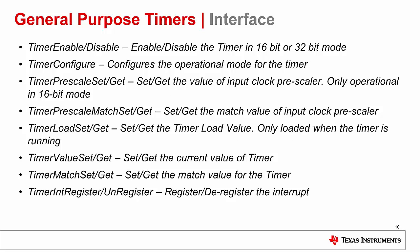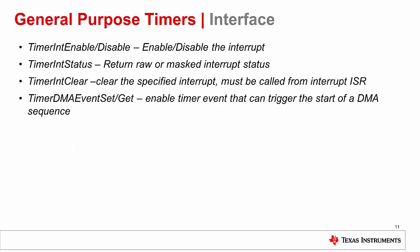Shown here are the API calls made available to configure the GPT. These last API calls allow the user to configure the timers with interrupt vectors, showcase the ability to check the status of an interrupt, and use DMA for a timer event.